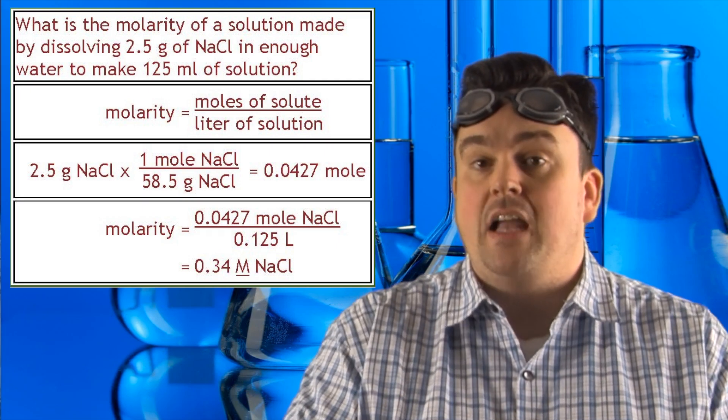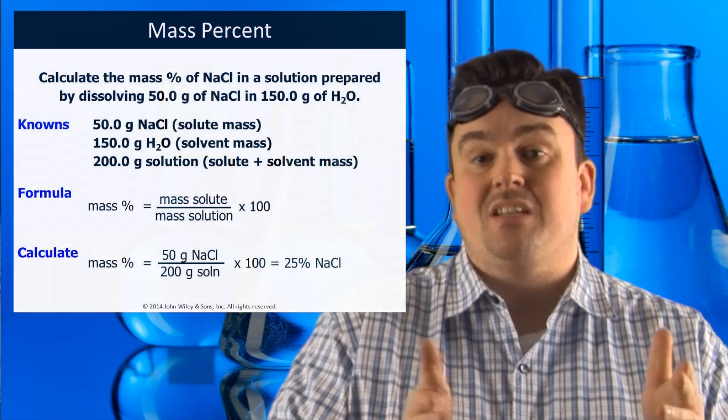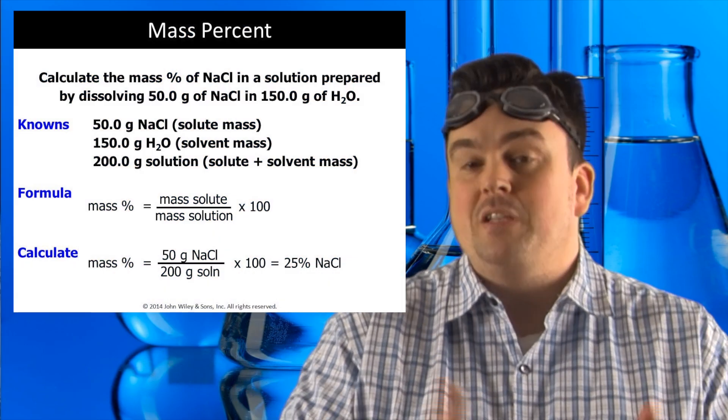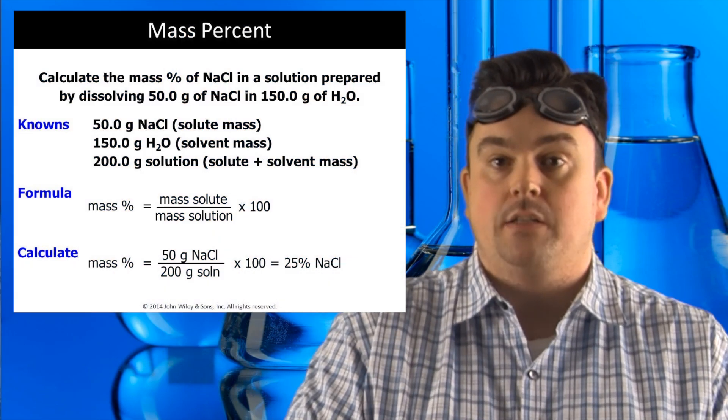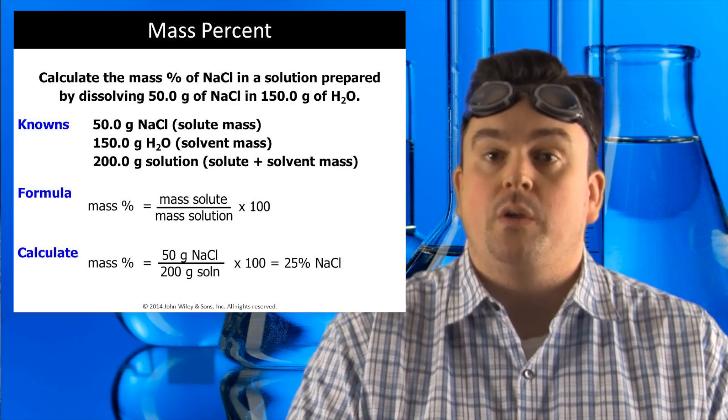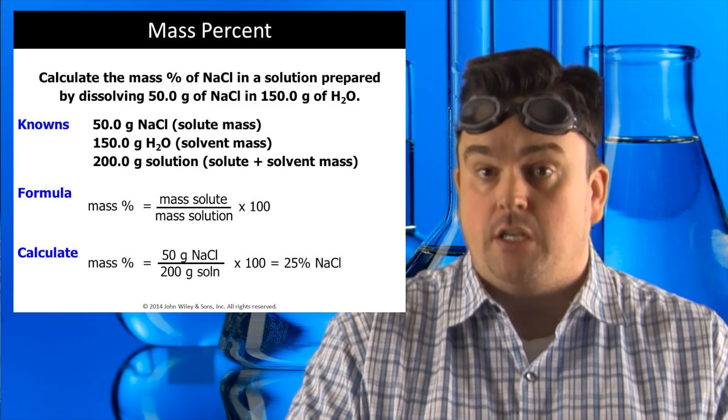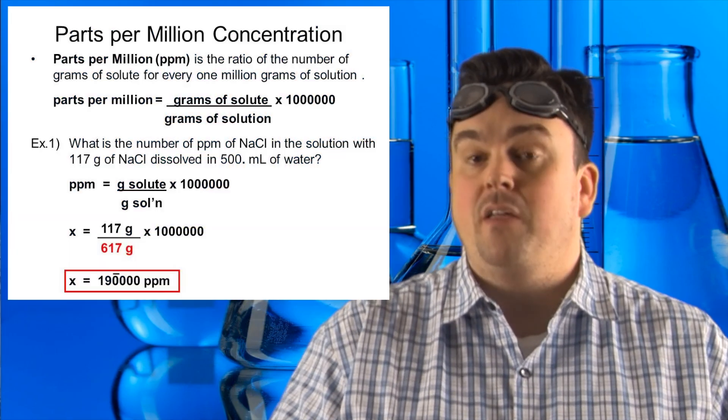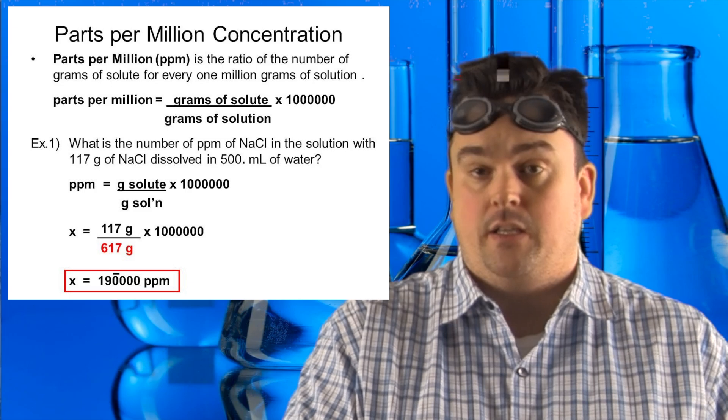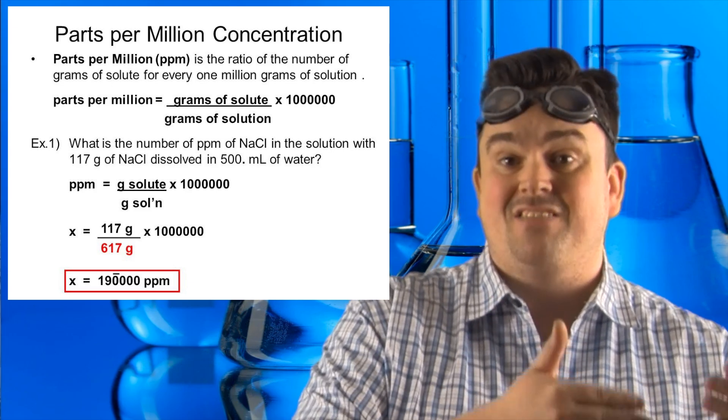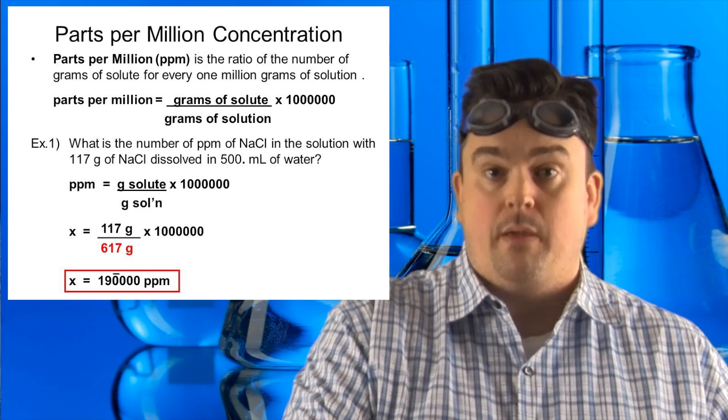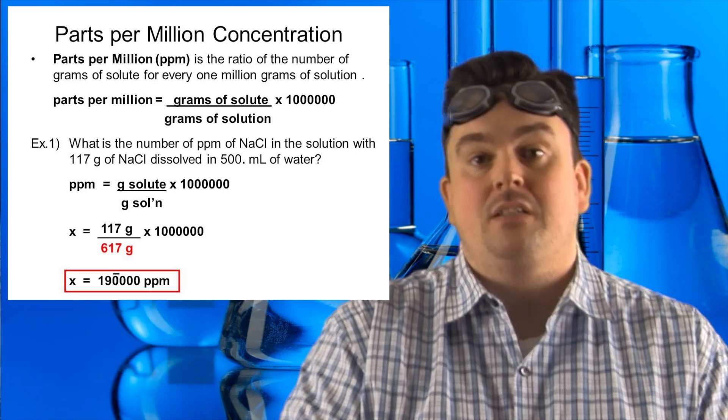Always divide by liters of solution. In percent by mass, it is always part over whole for a percent. In the case of solutions, it's always the mass of the solute divided by the mass of the solution, times 100. Parts per million is very similar to that calculation, where it's the mass of the solute divided by the mass of the solution, but this time times a million.